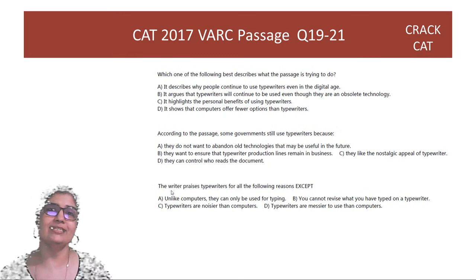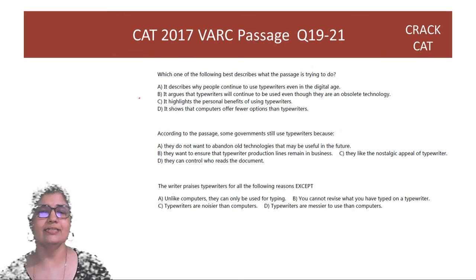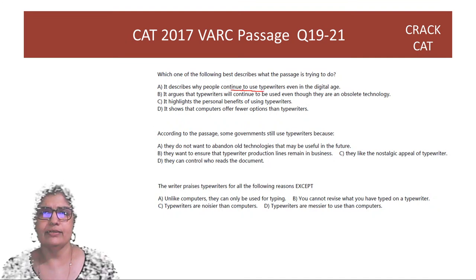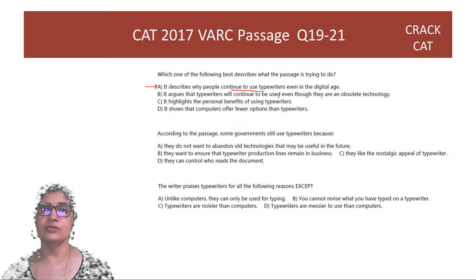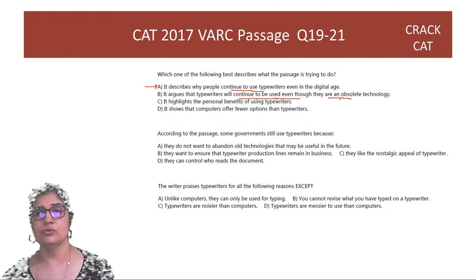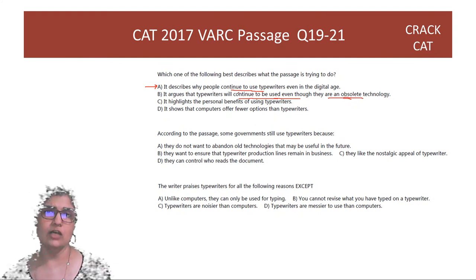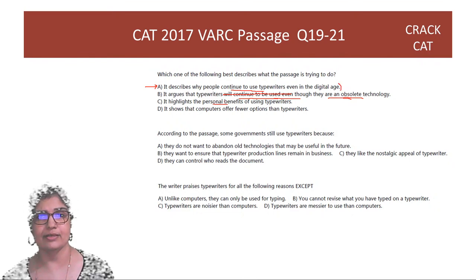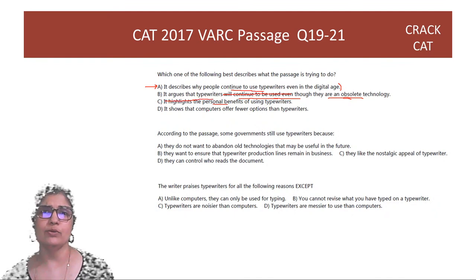Question: Which best describes what the passage is trying to do? Option A — why people continue to use typewriters — is the best answer. Option B mentions future use and 'obsolete technology' not clearly stated. Option C about personal benefits is weaker because the main point is why people still use typewriters despite digital alternatives. Option D about computers offering fewer options is not mentioned. The answer is option A.